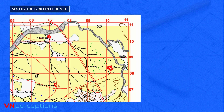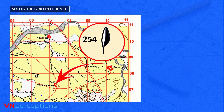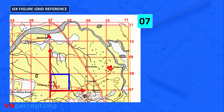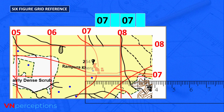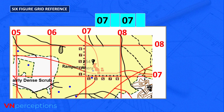Another example using survey tree number 254: the four-figure is 0707. First write 07 for the easting, then divide the block into 10 parts — the tree lies at the 2nd part, so write 2. For northings, write 07 and the extension comes to 5. So the six-figure grid reference is 072075.